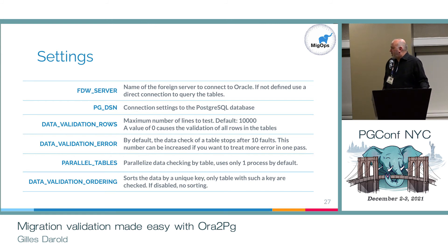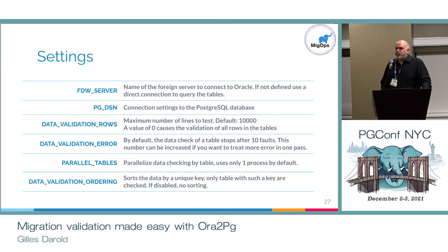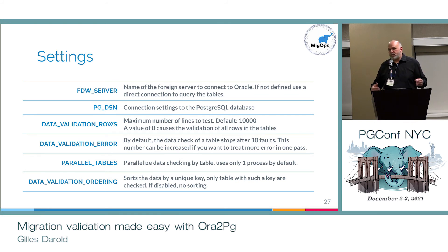You can also change this and force ORA2PG to scan all rows. The configuration directive to control this is called DATA_VALIDATION_ROWS. There is also a directive called FDW_SERVER which allows you to give a name to the foreign server you want to use. You don't have to create it — it will be created directly by ORA2PG if you set a name to this directive. PGE_DSN is to set the communication to Postgres. The -PE option allows you to compare multiple tables at the same time, gaining time. The DATA_VALIDATION_ORDERING directive allows you to enable or disable the ORDER BY clause in the select.